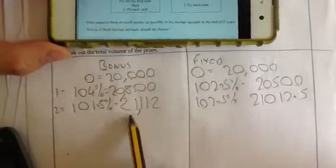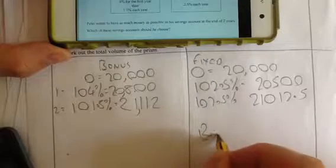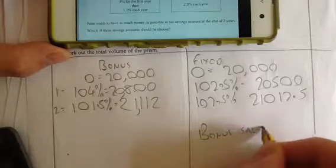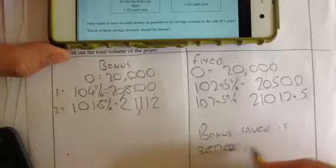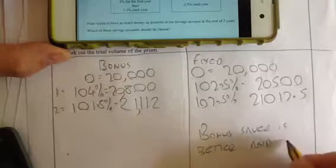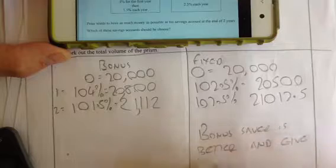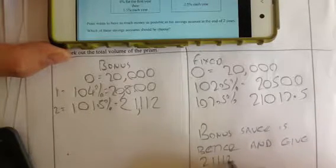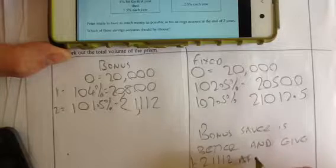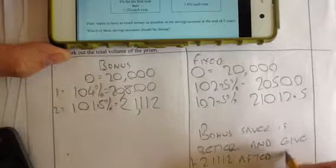Now which one's bigger? It's going to be this one here. So I'm going to say Bonus Saver is better. It gives £21,112 after 2 years.